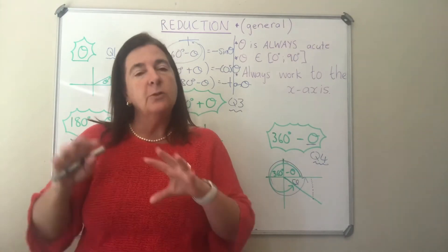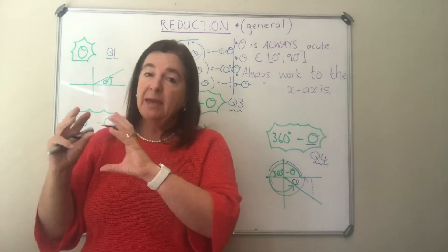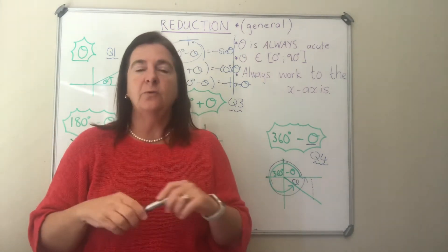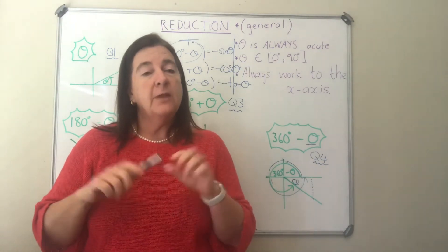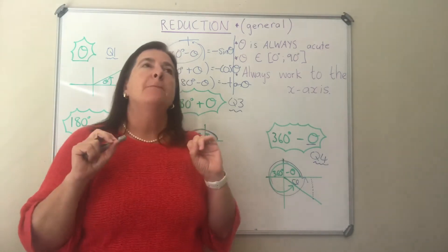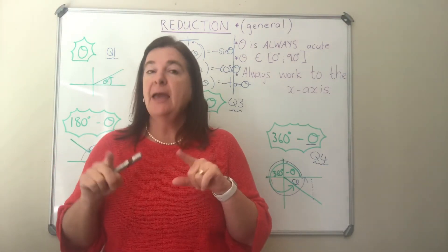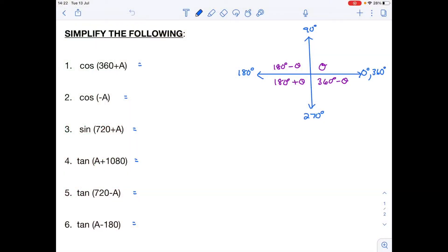Remember, it's not only theta — it could be any other angle, but it's always acute. We reduce it every time using the reduction formula from the big angle to the acute angle, checking if it's positive or negative depending on which quadrant we end up in. Now for some specific examples: cos of 360 plus a. The first question we always ask is what quadrant is this angle in? 360 plus a takes us a complete revolution plus a, and since a is acute, it's going to be in the first quadrant.